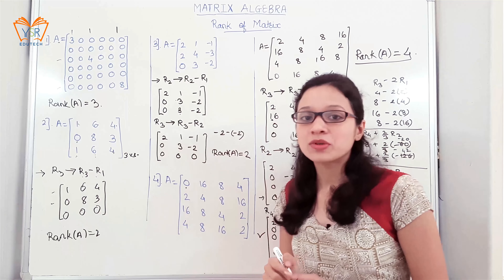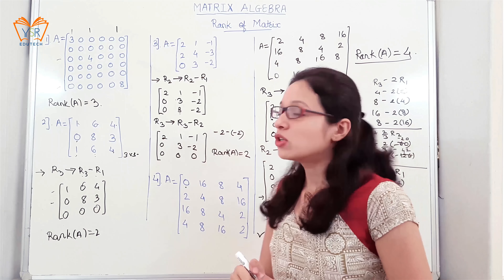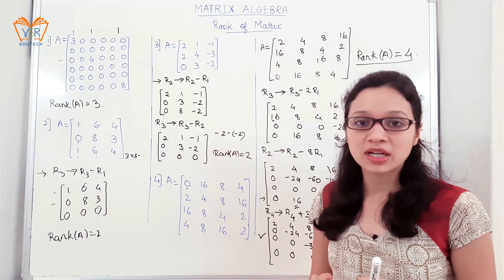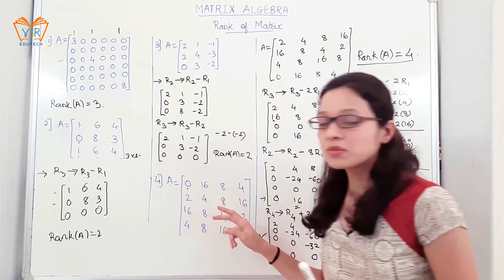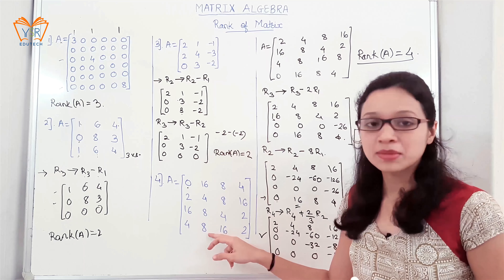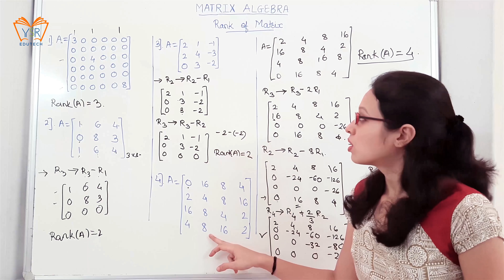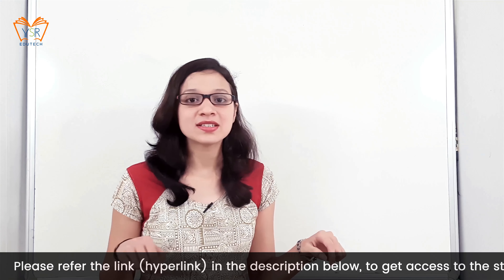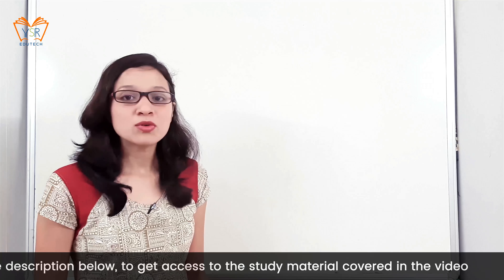In this way, elementary operations are performed. The only care to be taken is to first convert the given matrix into upper triangular form and perform elementary operations such that elements are made equal to 0. Hope you have understood the concept. Thank you for watching. For any doubts and suggestions, please write in the comment section. For more details, you can refer to related videos. Please like, share, and subscribe.